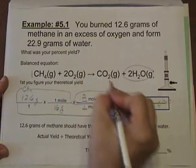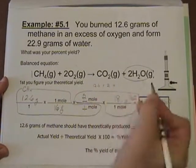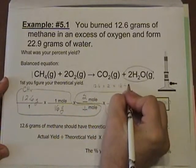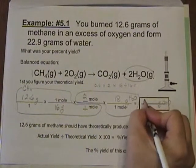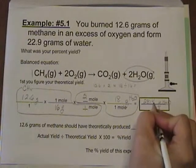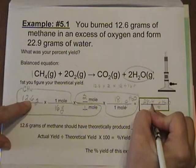So when we punch that all into the calculator, it would be 12.6 times 2 times 18 divided by 16 equals. And that turned out to be 28.4 grams of H2O. I rounded that because I had 3 sig figs over here, I wanted 3 sig figs over here.